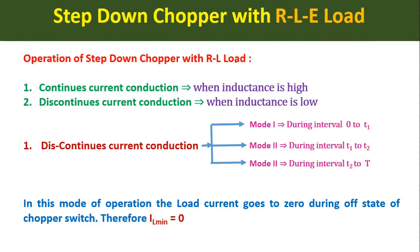Next is the operation of the step-down chopper with RLE load. The operation can be studied in two modes: the continuous current conduction mode and the discontinuous current conduction mode. Continuous current conduction occurs when the inductance of the inductor in the load is high, making the load current continuous. When the inductance is very low, the load current will be discontinuous — this is called discontinuous current conduction mode, which we are studying in this lecture.